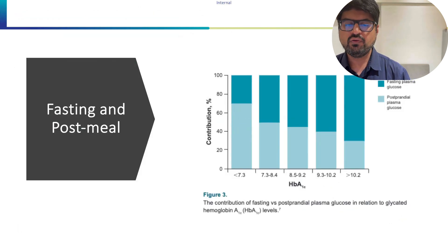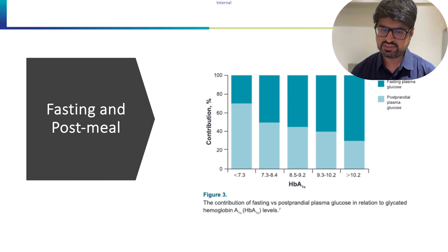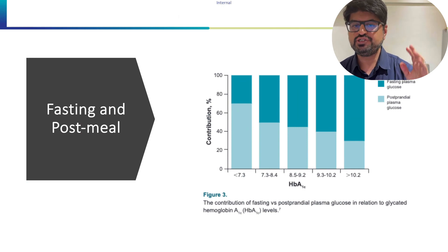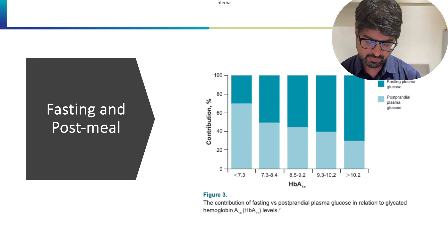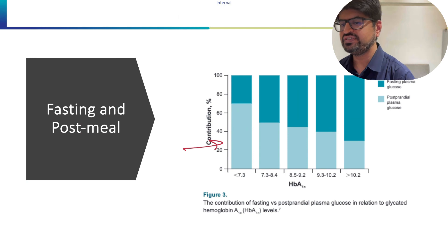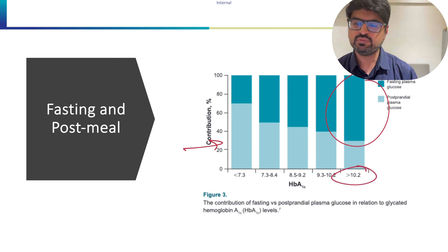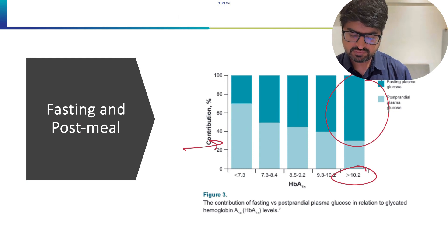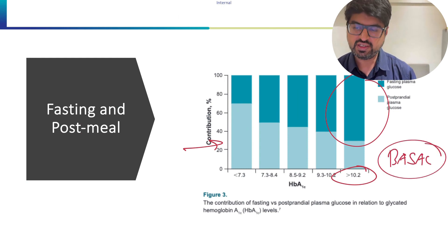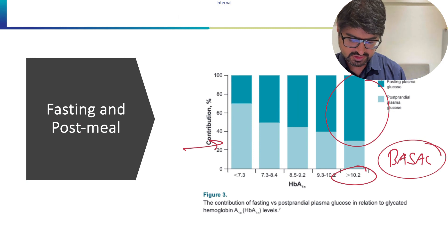An important concept: the contribution of fasting versus post-meal sugar to HbA1c. When HbA1c is lower, post-meal sugar contributes more to overall HbA1c. As HbA1c rises, fasting blood sugar contributes more. That's why when a patient's HbA1c is above 10%, we start with basal insulin — because the major contributor is fasting blood glucose.